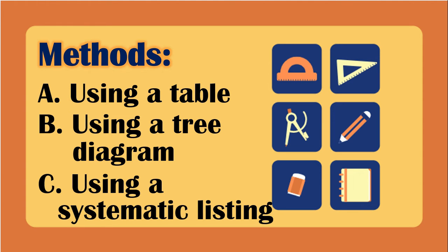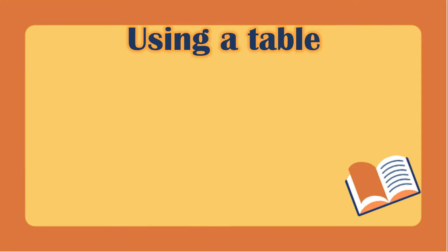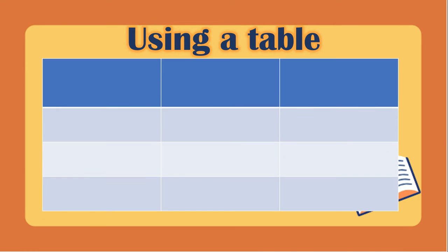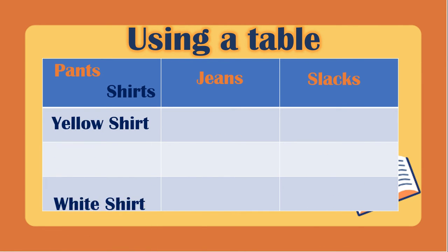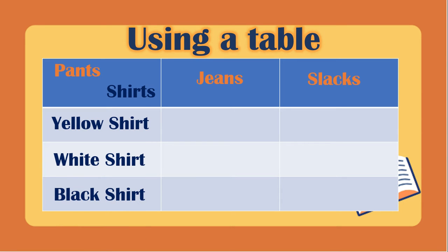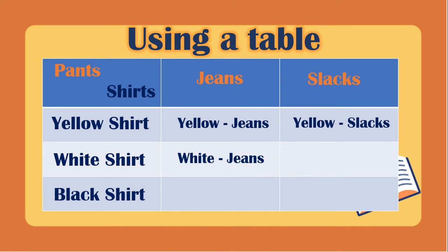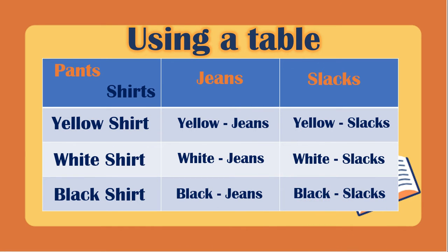Let us use the table with the same problem. We have the pants — the jeans and slacks — and then we have the shirts: yellow shirt, white shirt, and black shirt. We combine the possible outfits: yellow shirt and jeans, yellow shirt and slacks, white shirt and jeans, white shirt and slacks, black shirt and jeans, and black shirt and slacks. This is the representation using the table.